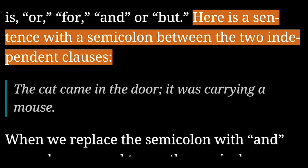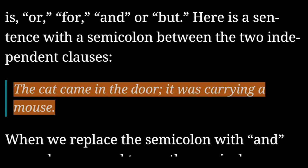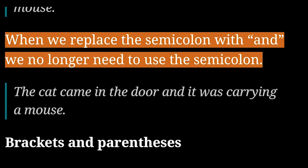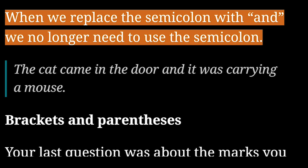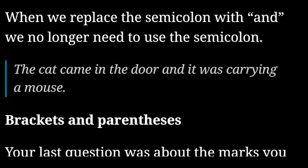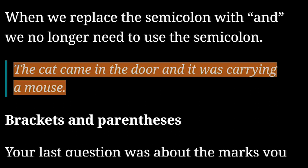Here is a sentence with a semicolon between the two independent clauses: 'The cat came in the door, semicolon. It was carrying a mouse.' When we replace the semicolon with 'and,' we no longer need to use the semicolon: 'The cat came in the door and it was carrying a mouse.'